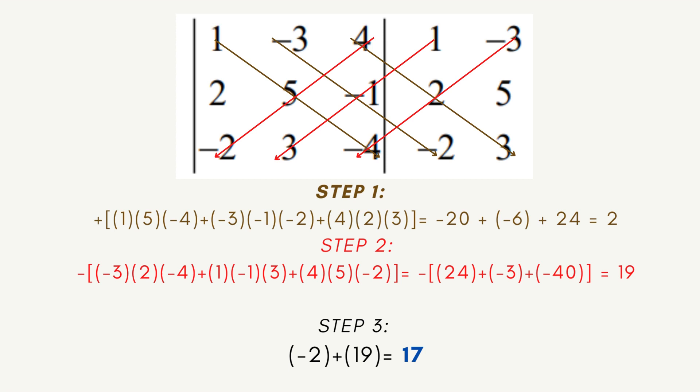Lastly, we are going to add the two sums together to get the determinant. We have negative 2 and positive 19. I am sorry, for step 1 we will get negative 2. Negative 20 plus negative 6, negative 26 plus 24. Yes, it is negative 2. So it is negative 2 plus, in step 2, we got positive 19 that will give us a result of positive 17.